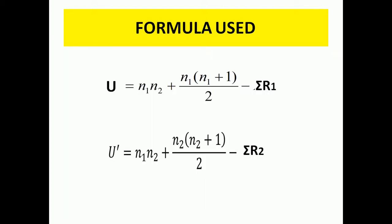Now let's see the formulas used for calculating Man-Whitney. We have two formulas. The first one is: U = n1·n2 + n1(n1+1)/2 − ΣR1. After calculating U, we calculate U'. The formula is the same, but here we use the second sample: n1·n2 + n2(n2+1)/2 − ΣR2.